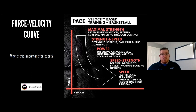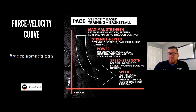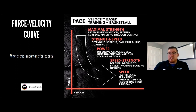Using basketball as an example, we can take the force-velocity curve and map movements from the game onto it. A high-force movement might be establishing position on an opponent, setting screens, or finishing through contact — velocity isn't high but force output to stabilize your body is significant. Moving toward velocity, we have attacking the basket, jumping, cutting, and scoring options.